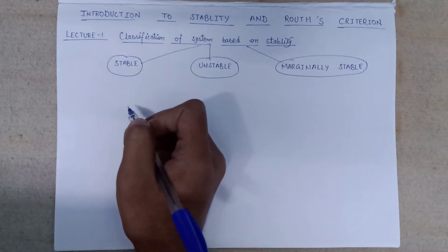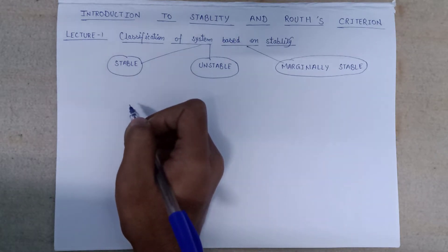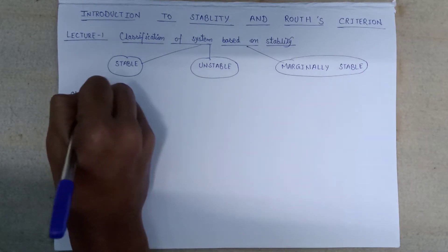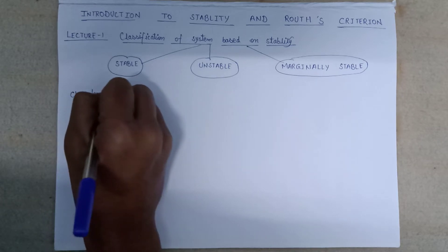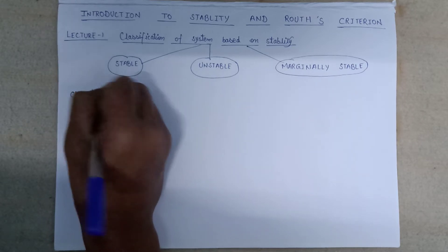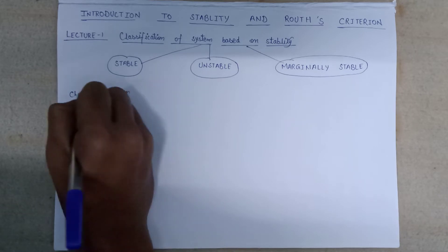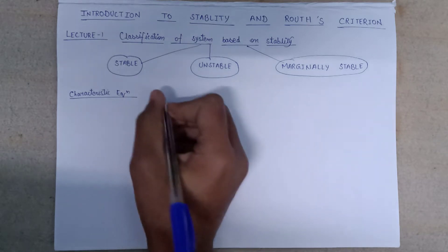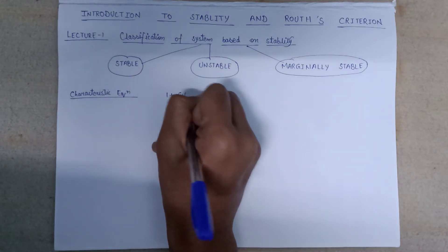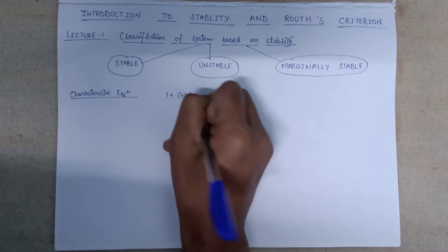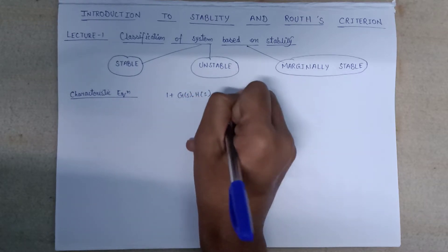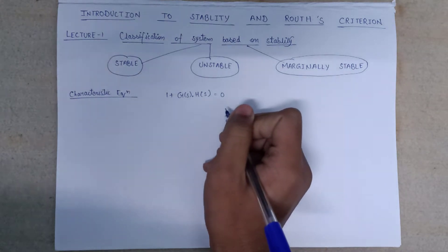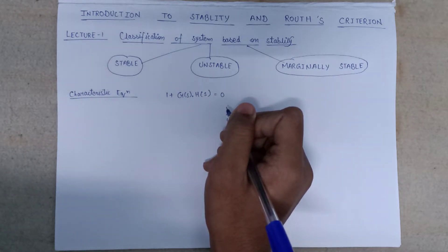Let's discuss about the characteristic equation first, after that we will discuss about the stability of the systems. The expression of the characteristic equation can be given as 1 plus G(S) into H(S) equals to zero. This is the perfect expression for the characteristic equation. Let us take an example of a characteristic equation.